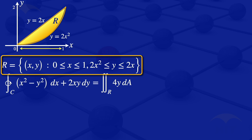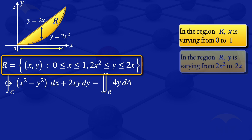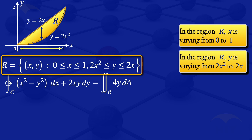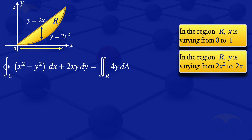The region R is the region bounded between these two curves that I have plotted, which I have shaded. Inside the region R, y varies from 2x squared to 2x, and x varies from 0 to 1. From the graph, we can see that 2x is above 2x squared in the interval from 0 to 1, so 2x is the upper limit and 2x squared is the lower limit for y. Our integral becomes the integral from 0 to 1 of the integral from 2x squared to 2x of 4y dy dx.